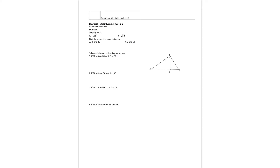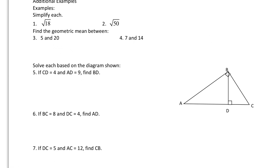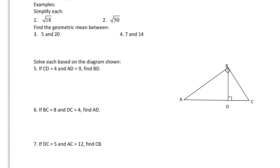That's pretty much the lesson, and let's do some examples. The first set are basic simplifying. For the first one, I can break this down into 9 times 2, so this will be 3 root 2. For the second one, I'm looking for a perfect square — that's 25 times 2, so root 25 times root 2 gives me 5 root 2.